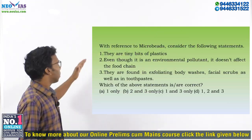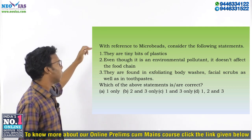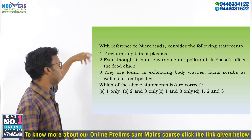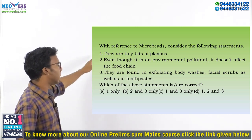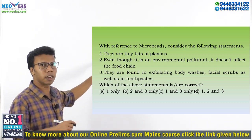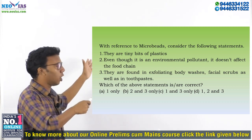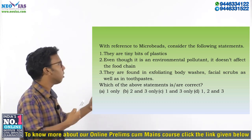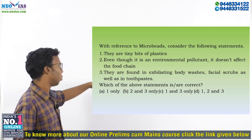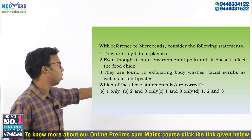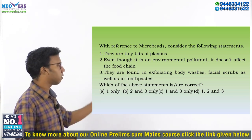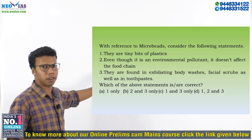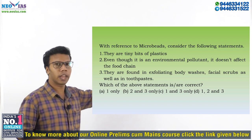Now let us move on to the model question. With reference to microbeads, consider the following statements. Statement one: they are tiny bits of plastic — that is correct, so we eliminate option B. Statement two: even though it is an environmental pollutant, it does not affect the food chain — that is a wrong statement, because microbeads along with their chemicals undergo bioaccumulation and biomagnification, impacting the food chain. So we eliminate option D. Statement three: they are found in exfoliating body washes, facial scrubs, as well as in toothpaste — that is also correct. These are consumer products where we can see microbeads. So the answer is C — statements 1 and 3.